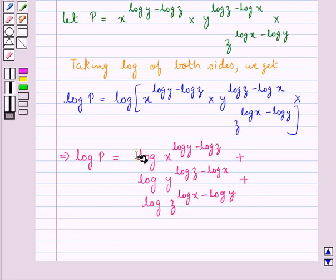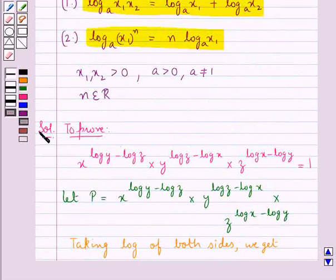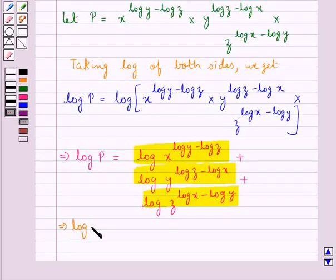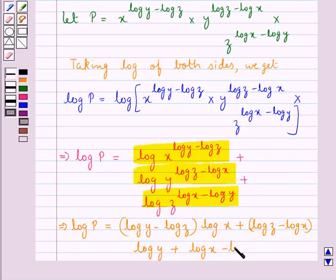Now, again for each term on the right-hand side, we would use the second law of logarithm, which is log x1 to the power n to the base A is equal to n into log x1 to the base A. So, using this law, we get log P is equal to (log y minus log z) into log x plus (log z minus log x) into log y plus (log x minus log y) into log z.